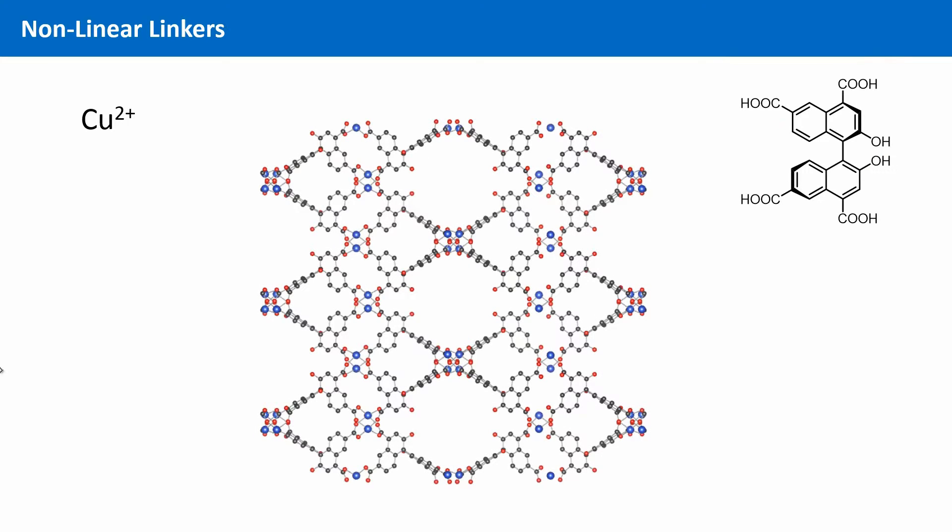This MOF, for example, uses a rather large molecule as a linker. Here we have four carboxylic groups that are relatively far apart from each other. Also, this linker has an inherent chirality. We have talked about chirality shortly in one of the last chapters, when we introduced screw axis. This chirality is then reproduced in a MOF made from this linker.